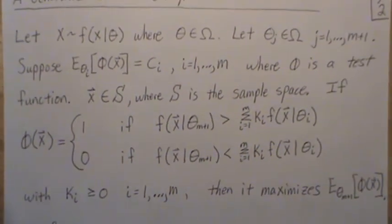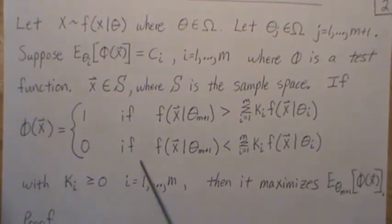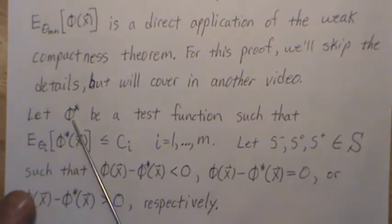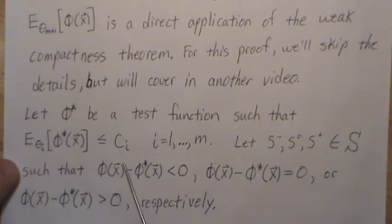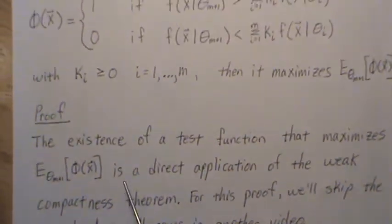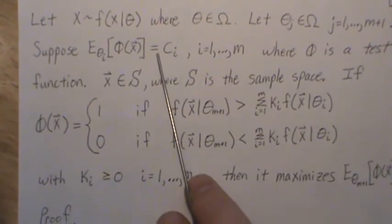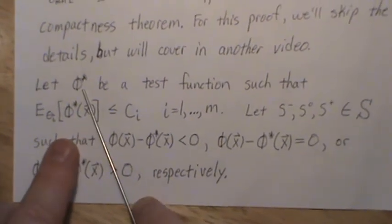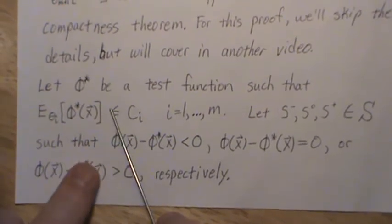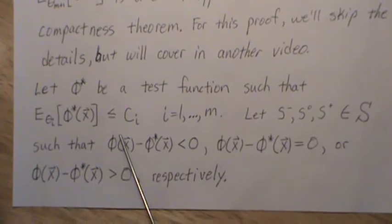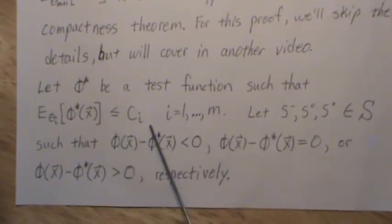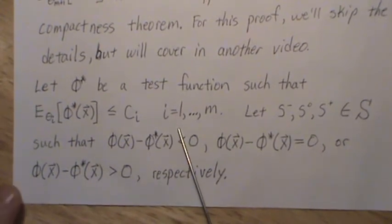Once we know one exists, let's prove that this test is the one that maximizes that value — that's our goal now. Let phi* be a test function such that it satisfies the side conditions. This is our original test function, and these are our side conditions making them equal to c_i. In our proof, we're going to go further and say that they only have to be less than or equal to c_i — they don't all have to be equal. This will play a part in some later proofs, so that's why I wanted to point out that little subtlety.